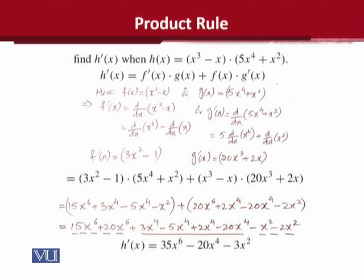After substitution, I leave the simplification as an exercise for you. We rearranged: the x to the power 6 terms were collected, the x to the power 4 terms were collected, and the x to the power 2 terms were collected. In this way, the derivative of this function was calculated, represented as h bar of x, which is 35x⁶ minus 20x⁴ minus 3x². This is how we can apply the product rule on any function appearing as a product of two or more functions.